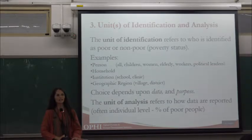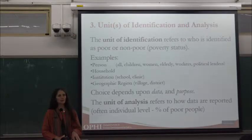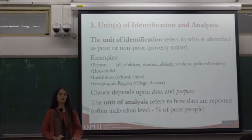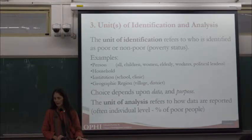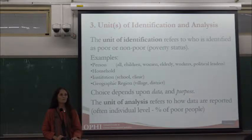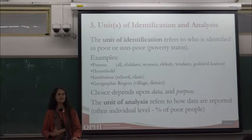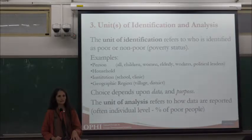The unit of identification and analysis is a very important and fundamental early decision. In English terminology, the unit of identification is the row in the matrix that you identify as poor or not. The unit of analysis is the denominator when you create your poverty statistic, particularly the head count ratio. The unit of identification could be a person, a household, an institution, or a geographic region — the most common being people or households.